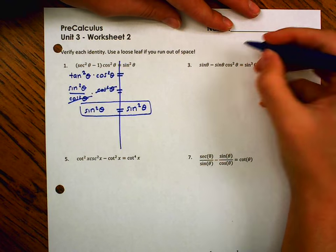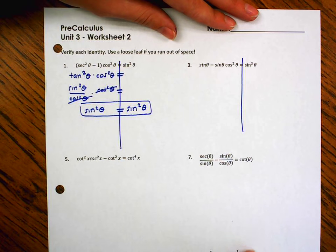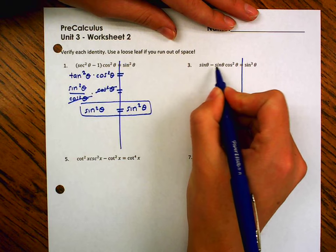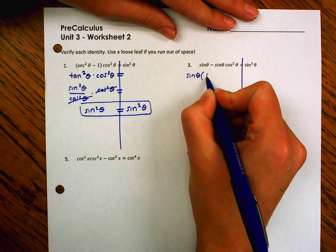I'm going to factor, well, I'm going to leave this side. Because to me, that looks simpler. Something that's easier for me to try to match. And I notice I have a sine of theta in both of these terms. So, I'm going to factor out that sine theta.